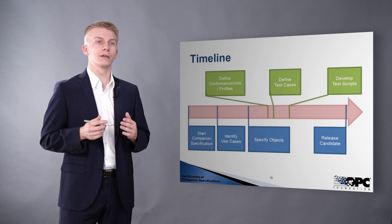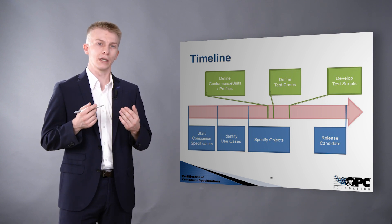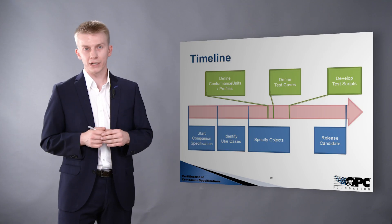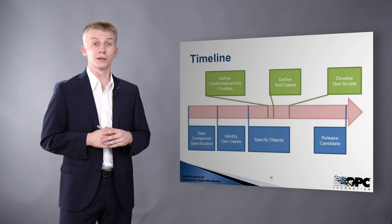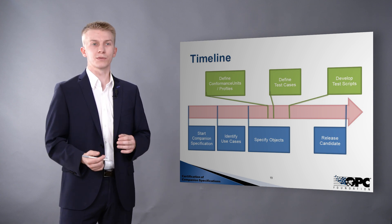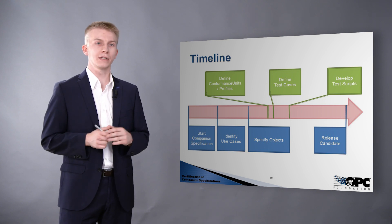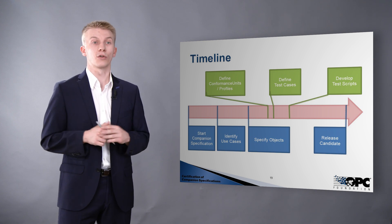We often get asked: when can we start preparing the necessary parts for companion specification certification? This is basically an ongoing process. You can start defining conformance units and profiles once you have specific objects and use cases defined. You can define test cases once the conformance units and profiles are clear, and develop test scripts once the test cases are stable. You just need to ensure that ahead of releasing the companion specification, the conformance units and profiles are defined.